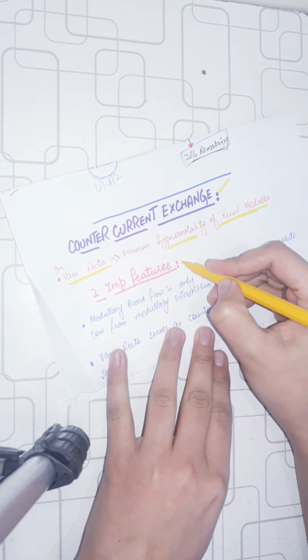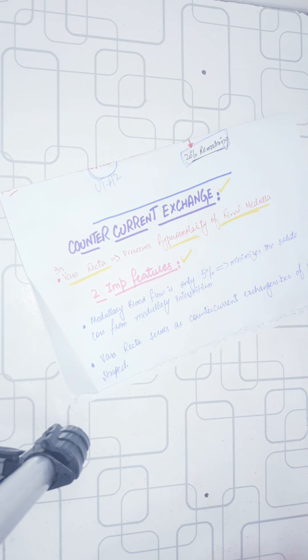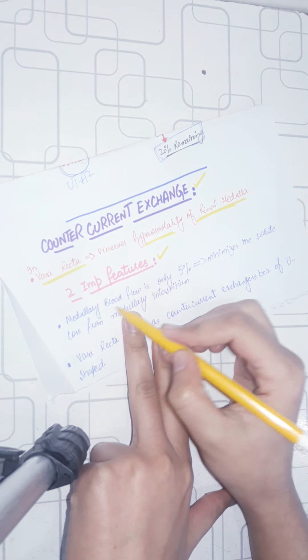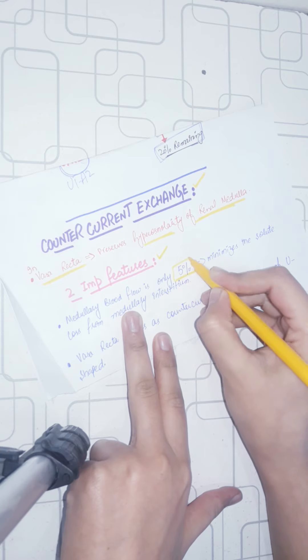There are two important features that we have to maintain the hyperosmolarity. First of all, we have to know that the medulla, deep into the medulla, the medullary blood flow is only 5%.